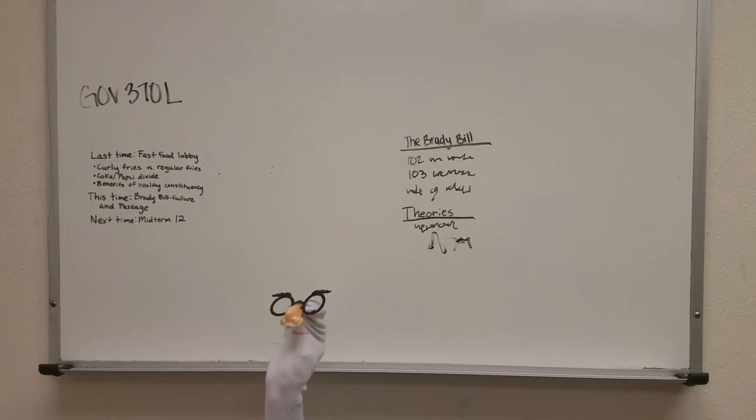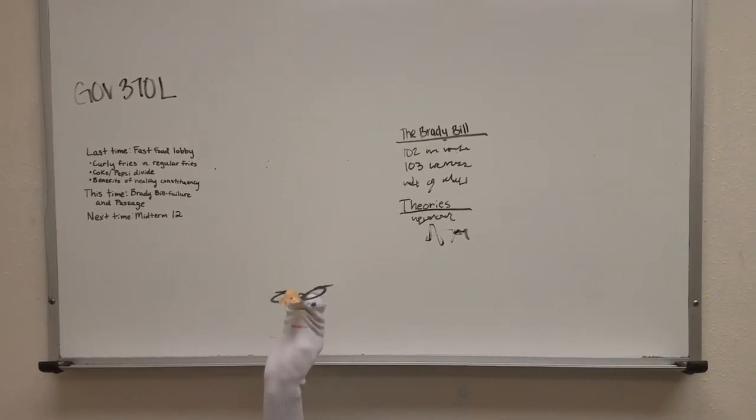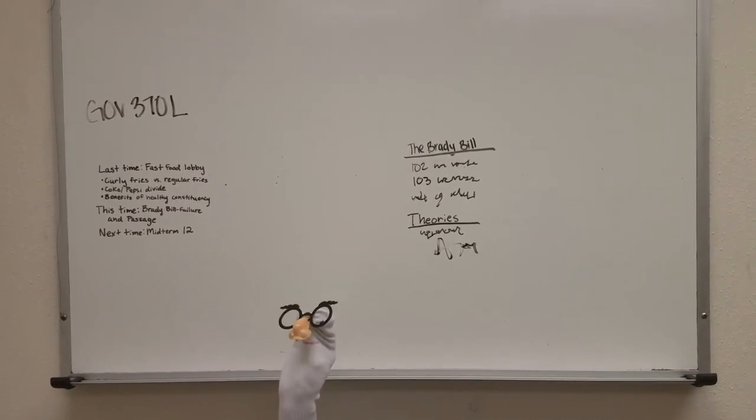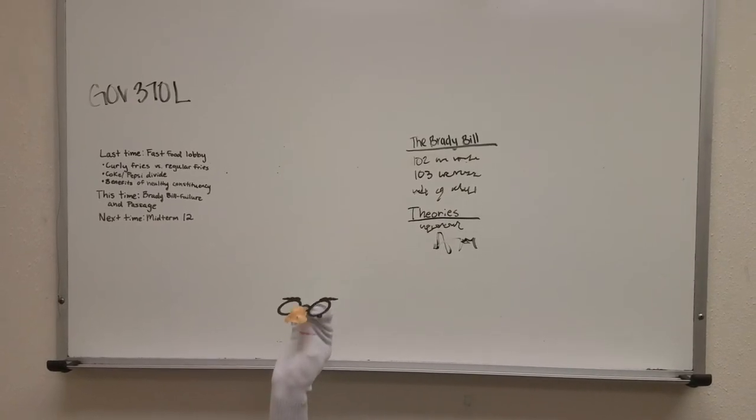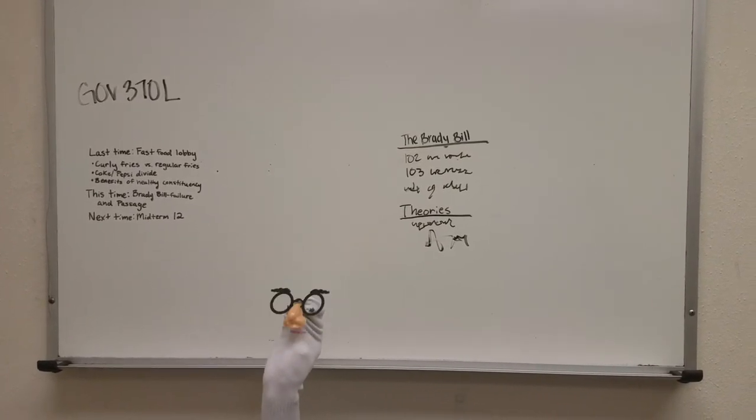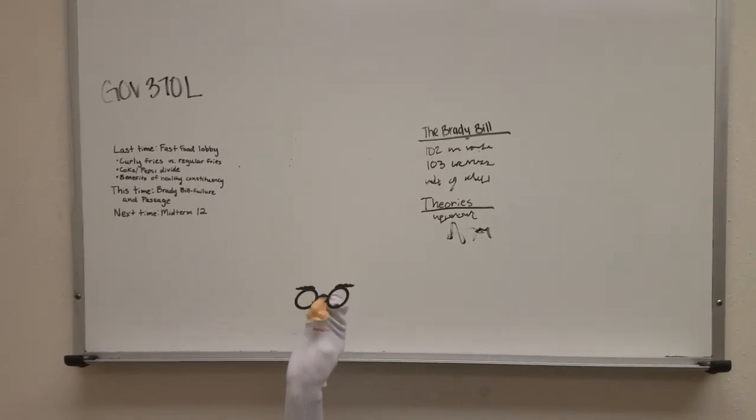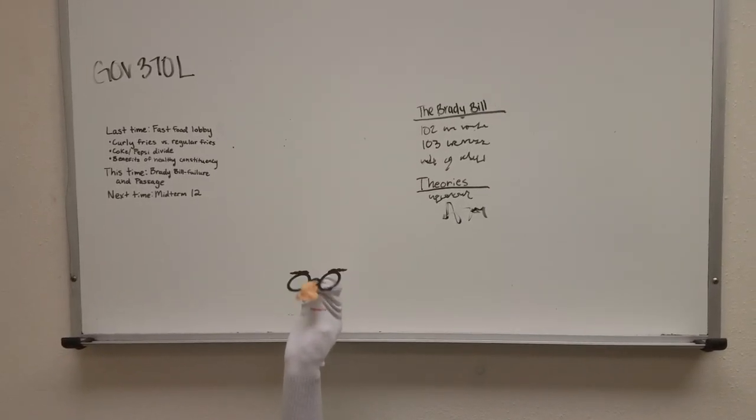So in February of 93, the Brady Bill is introduced in the House and Senate as HR 1025 and S 414. In the House, the bill gets referred to the same committee and subcommittee from 91. The bill passes the House, and the Committee of the Whole hears debates and votes on amendments.